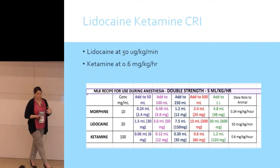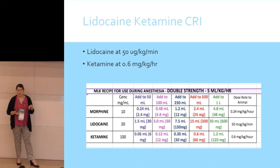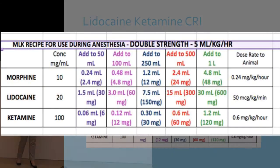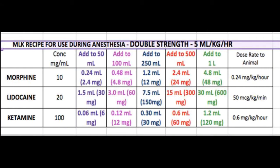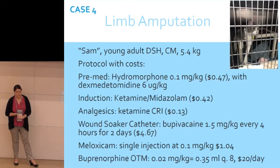The LK CRI dose: lidocaine at 50 mcg/kg/minute — same as the starting dose for antiarrhythmics. Ketamine range is 0.1 to 0.6 mg/kg/hour; we usually dose at 0.6. The chart shows how much to add to the bag to run at 5 mL/kg/hour. In our clinic we don't use fluid pumps most of the time — we just calculate the drip rate to achieve 5 mL/kg/hour.